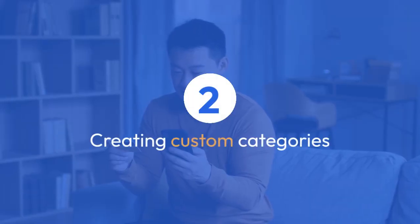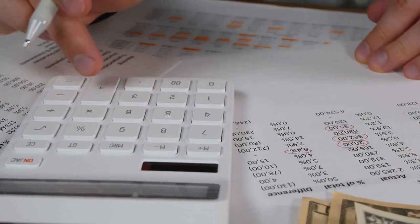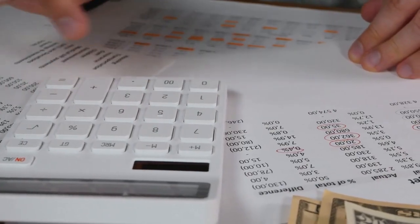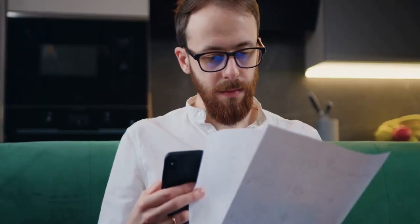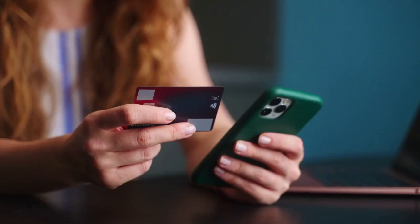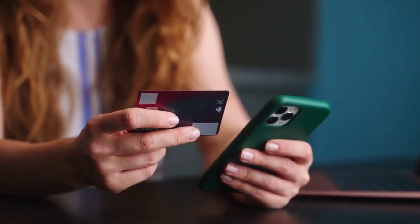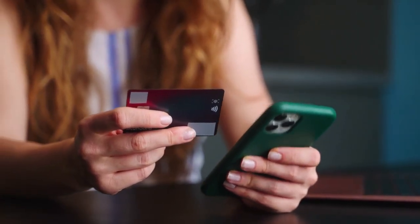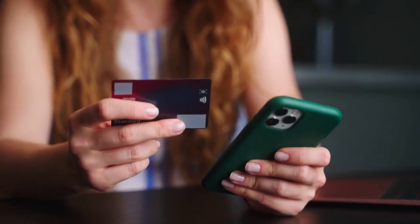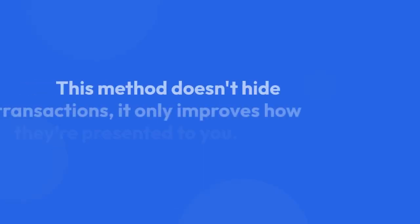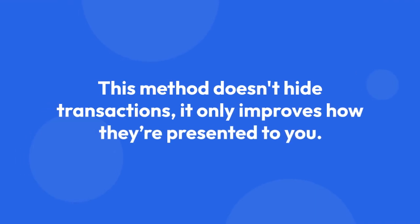Creating custom categories: to further refine your organization, Chase allows you to create your own categories. This is useful for grouping transactions that don't fit into Chase's preset options. Let's say you want to track your subscription spending separately — you can make a Subscriptions category and assign all those transactions to it. Again, this method doesn't hide transactions; it only improves how they're presented to you.